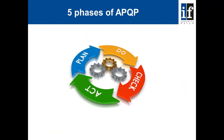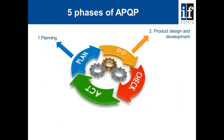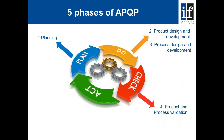When we consider the five phases of APQP, we have phase one which is planning. We then have phase two, which is doing — design the product, design the process. We have check, which is validation: check the product as it's been defined in the process and how it's operating. And then finally, we act during ongoing production, use by the customer, and post-delivery service. So the five phases of APQP link very nicely back to Plan, Do, Check, Act.